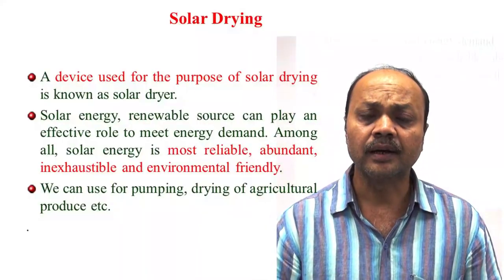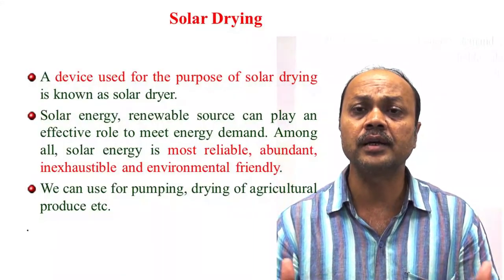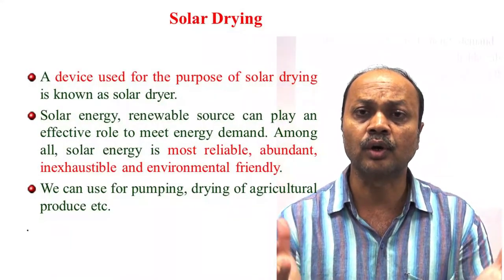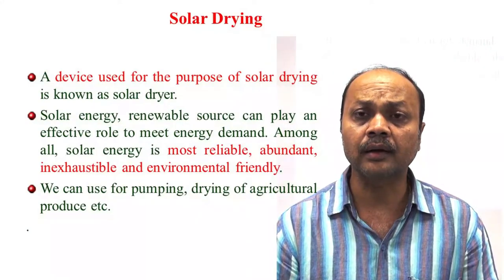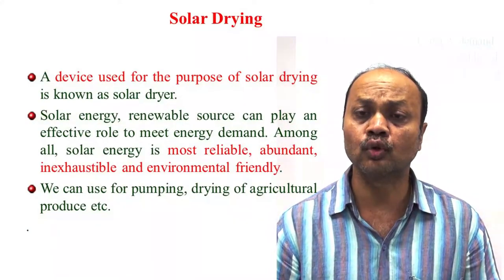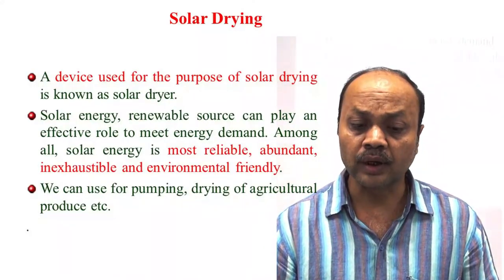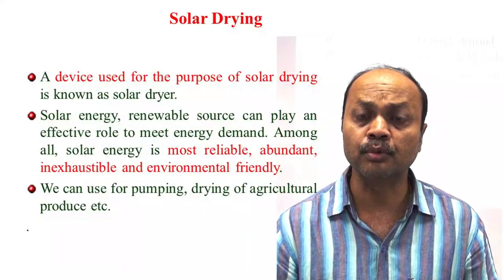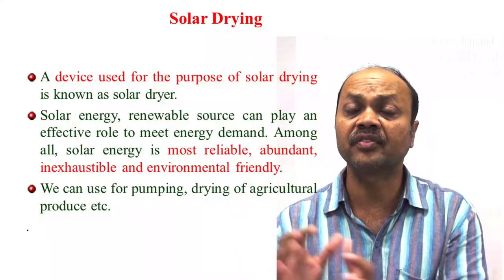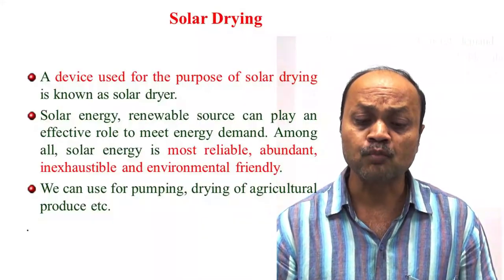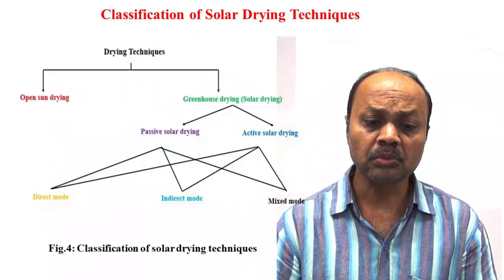What is solar drying? Basically, it is a device used for the purpose of solar drying. Whenever you are using any chamber or drying chamber to dry the product using solar energy, that is your solar dryer. Throughout India, the Government of India is giving a lot of emphasis on solar energy — because it is totally free, it is a clean source, and it is a most reliable, abundant, and renewable source. The government is giving a lot of emphasis on solar energy in the field of agriculture, for solar drying, solar pumps, and many other activities.